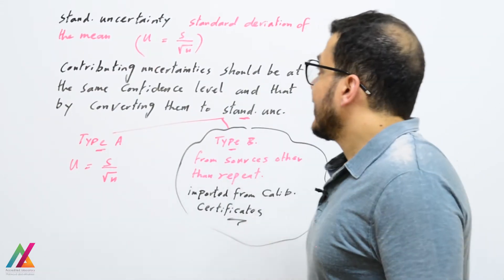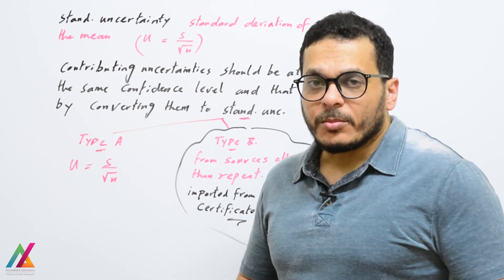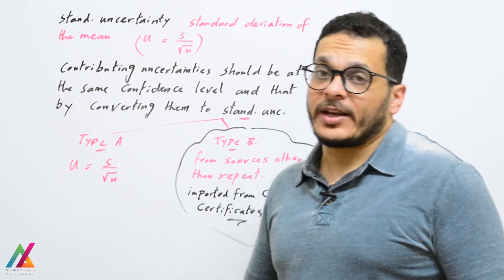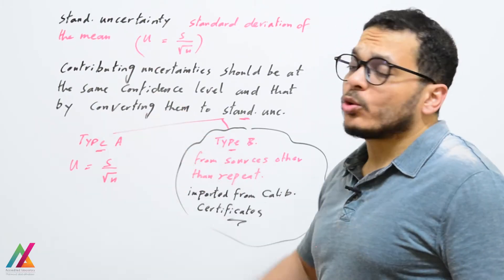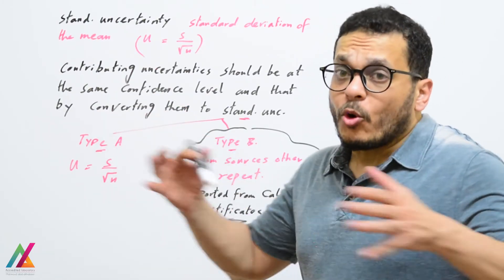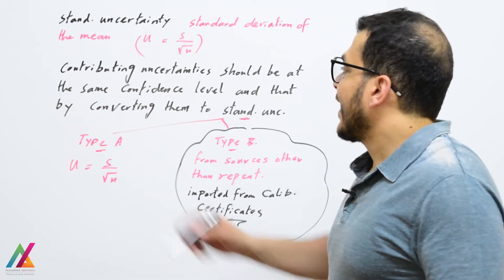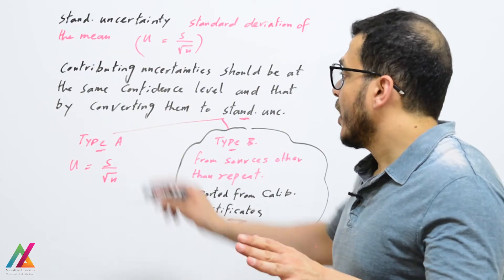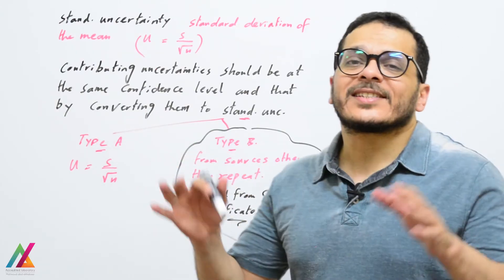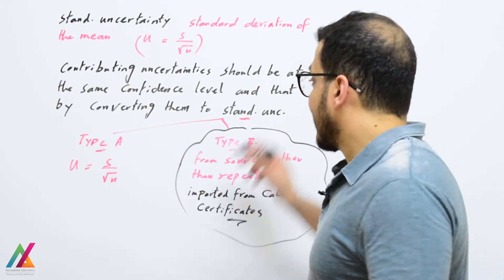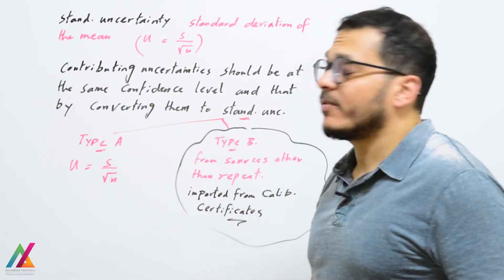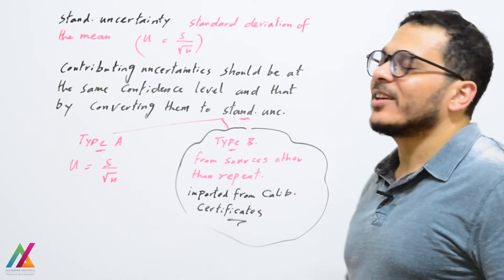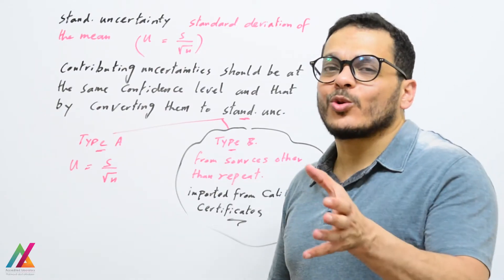Standard uncertainty is the standard deviation of the mean, equal to standard deviation divided by the square root of n. All contributing uncertainties from all sources shall be at the same confidence level, which is achieved by converting them to standard uncertainty. For Type A evaluation, standard uncertainty equals standard deviation divided by the square root of n.